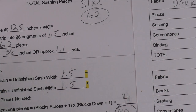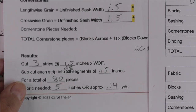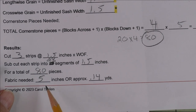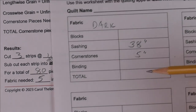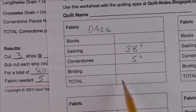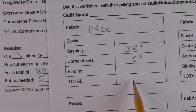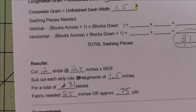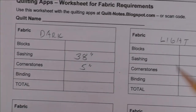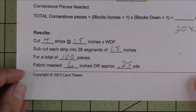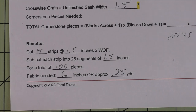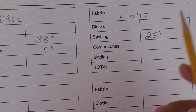I'm going to put 38 inches in for the dark sashing. Then for the dark cornerstones we need 5 inches, so I'll put 5 there. Once I have all these filled out for a fabric, I total them up at the bottom and round up as needed — and you do want to get extra fabric because these are the exact amounts you need. Now let's go to the light worksheet: for the light sashing we need 25 inches, and for the light cornerstones we need 6 inches.